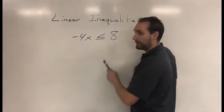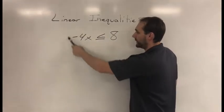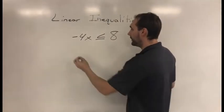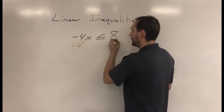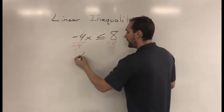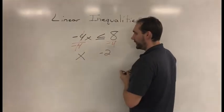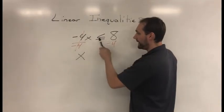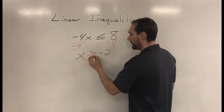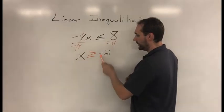So one more linear inequality. We'll keep it simple. I want to solve negative 4x is less than or equal to 8. So I need to get rid of this negative 4 times my x. And it's being multiplied. So what's the opposite of multiplying by 4? Divide by negative 4 on both sides. That'll cancel. That'll give me my x. 8 divided by negative 4 is negative 2. And remember, we are dividing across by a negative, so I have to flip my inequality sign here. So this less than or equal to becomes greater than or equal to. So my answer in simple notation is x is greater than or equal to negative 2.